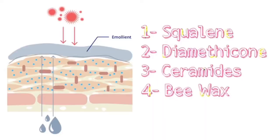So what are common emollients we find in moisturizers? They include squalene, dimethicone, beeswax, paraffin, and cetyl alcohol. These are some of the emollients we find in our skin products.